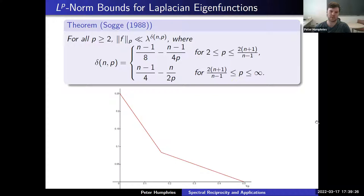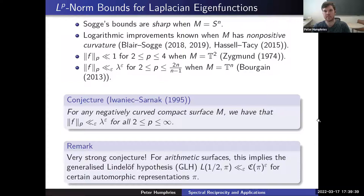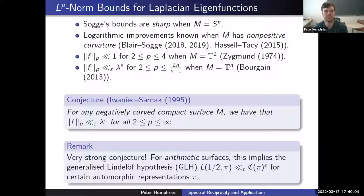You might ask: is this the best we can do? Does this accurately tell us the size of these Laplacian eigenfunctions in the large eigenvalue limit? The answer is yes, if we don't know anything more about the manifold. If we choose M to be the N-sphere, these bounds are sharp — you can actually show there exist eigenfunctions that saturate these bounds. But that's just for the N-sphere. Maybe there's something strange with the N-sphere — it has positive curvature. Maybe you can do better if you don't have positive curvature. This is known in certain cases: if you have non-positive curvature, you can do better, but the improvements to Sogge's bound are pretty minuscule — you get a logarithmic savings.